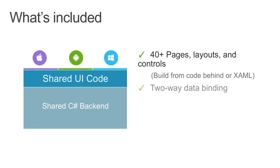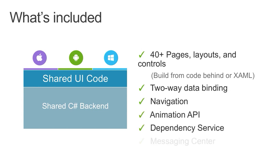Xamarin Forms includes 40-plus pages, layouts, and controls. You build UIs using either C# or XAML, with two-way data binding built in — so if you're used to MVVM, you'll feel right at home. There's also a built-in cross-platform navigation API, animation API, a dependency service to access native functionality, and a messaging center. It includes everything you need to build fully native applications for three platforms.